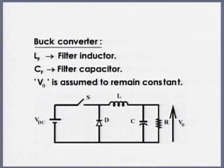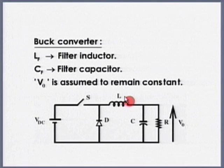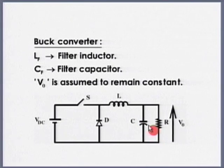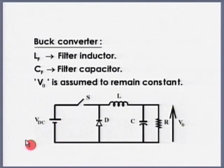Coming back to the buck converter — the circuit configuration is shown here. Switch S is switched at a very high frequency. L is the filter inductor, C_F is the filter capacitor. V_out is what I have to regulate — the output voltage. This voltage may be directly coming from a solar cell and it could vary. How do I analyze the circuit?